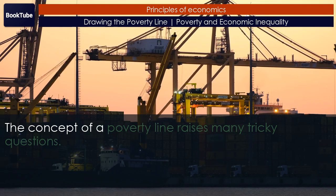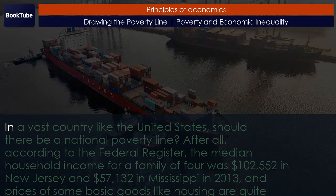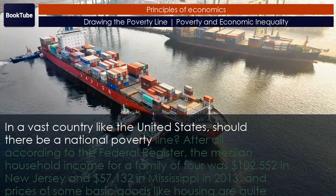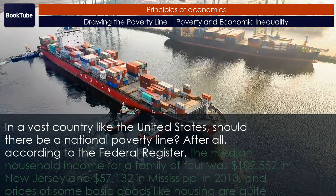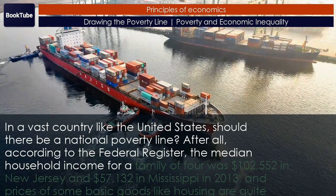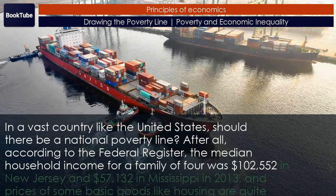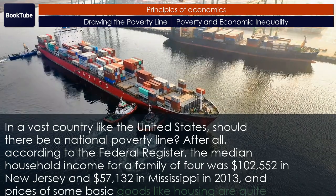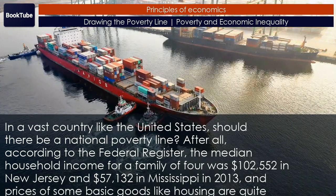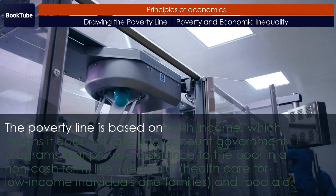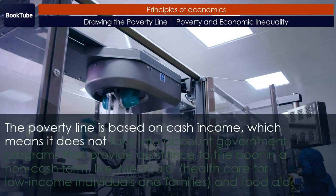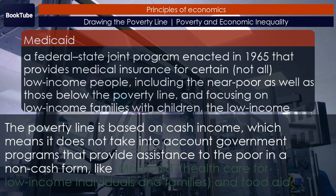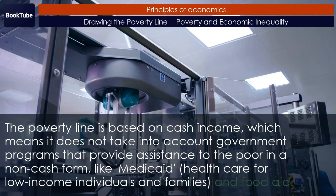The concept of a poverty line raises many tricky questions. In a vast country like the United States, should there be a national poverty line? After all, the median household income for a family of four was $102,552 in New Jersey and $57,132 in Mississippi in 2013, and prices of some basic goods like housing are quite different between states. The poverty line is based on cash income, which means it does not take into account government programs that provide assistance in non-cash form, like Medicaid, healthcare for low-income individuals and families, and food aid.